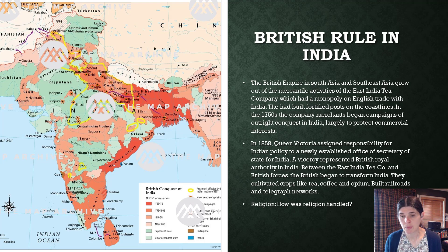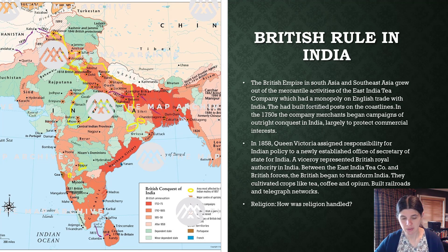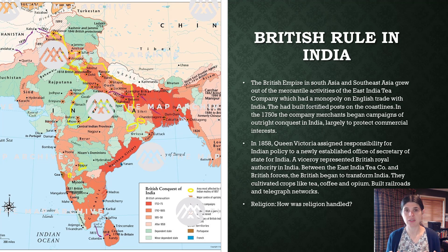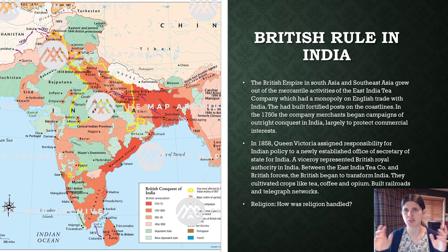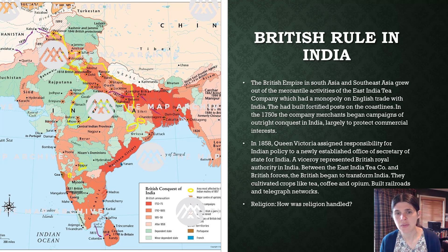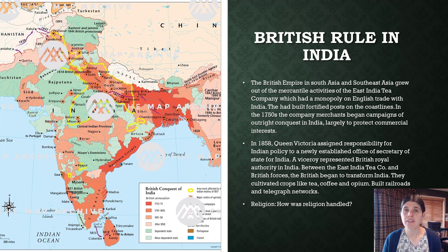They built railroads and telegraph networks — so it was a combination of private investment companies and the government. How was religion handled? People always think of missionaries as just agents of their government, and that's actually not true. Yes, missionaries came in with certain cultural issues of superiority, we can't discount that. But missionaries and the government weren't necessarily hand in hand. In some cases, the government took a more hostile stance towards missionaries if they felt that missionaries were going to harm their economic interests in the country.